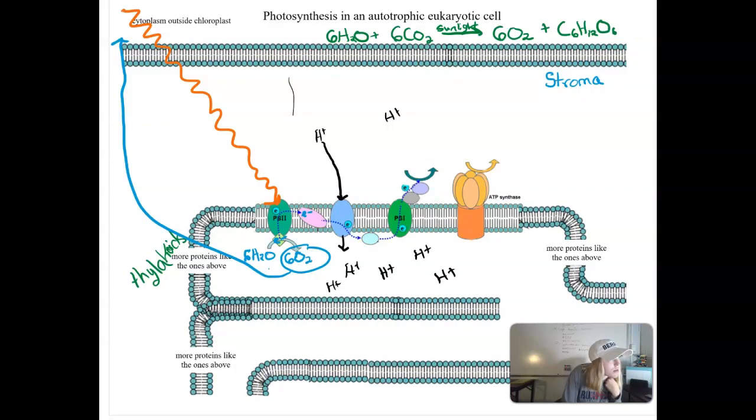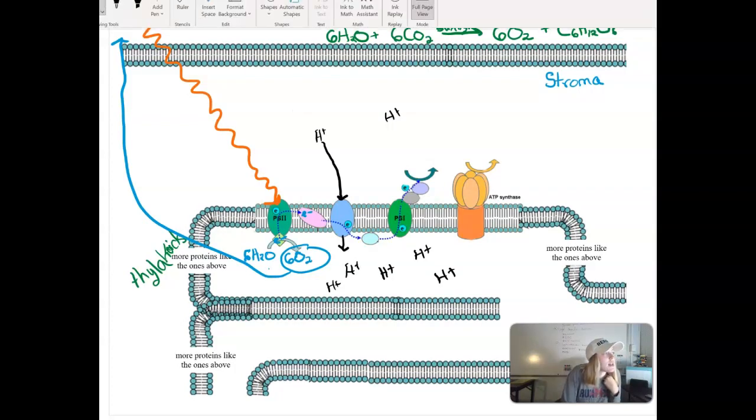So we have our H+. The electrons then are going to end up back in this photosystem one, so that's just a bundle of chlorophyll. We're going to see they end up there and they kind of rest because they're losing energy every step of the way.